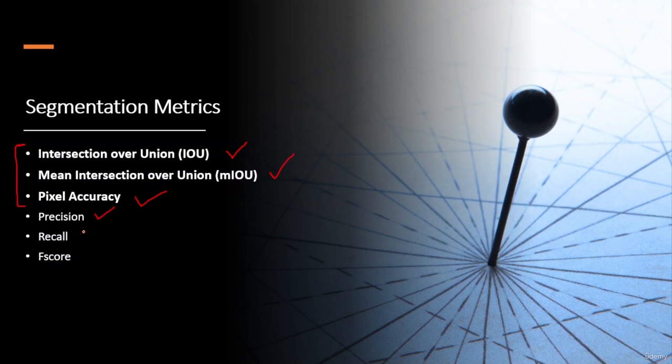However, precision, recall, and F-score can also be used to measure the performance of the semantic segmentation model. These metrics are often used in combination to provide a comprehensive evaluation of a semantic segmentation algorithm. By analyzing the results of these metrics, researchers and practitioners can gain insight into the strengths and weaknesses of their segmentation approach and make improvements as needed.